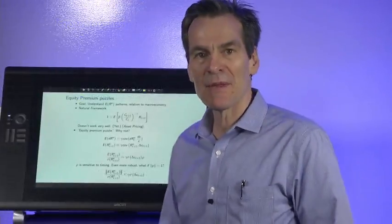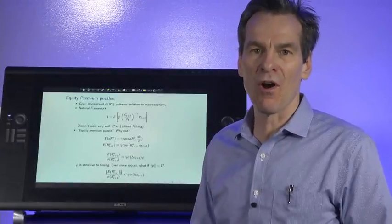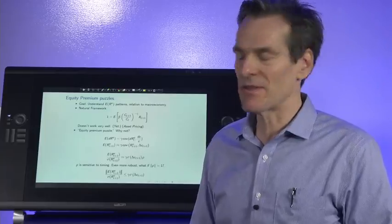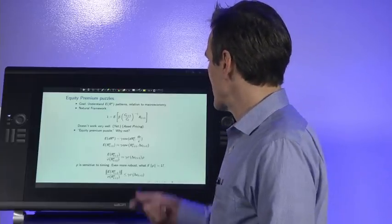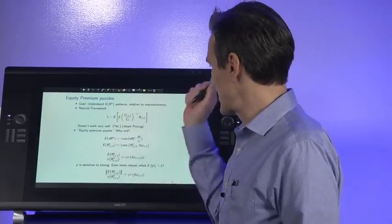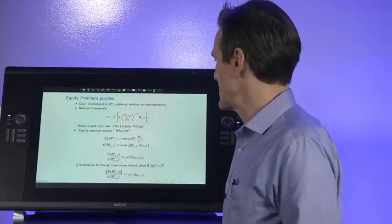Now, the equity premium puzzle is a set of calculations that diagnosed what really went wrong and help us find better models that are going to work better than this one. So let's start with the basic calculation. I've done here the standard first order condition in continuous time and then the approximation in discrete time.